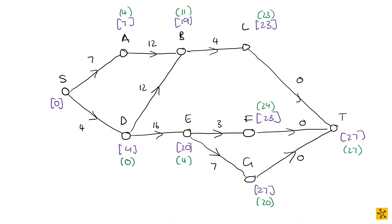So now we have our graph that basically has the earliest finishing times and the latest start times. And this can easily show us which one is our critical path. The first thing you'll notice is obviously where the latest start time is zero — that's definitely on our critical path. So D is definitely on our critical path.